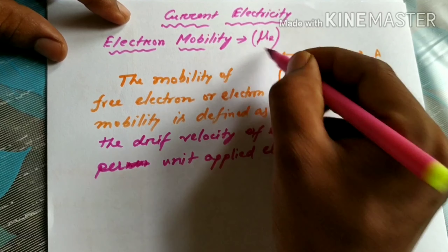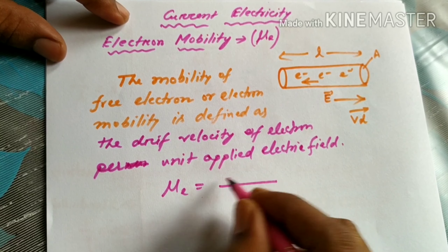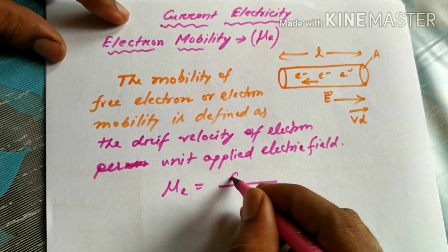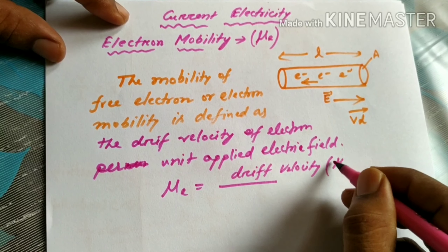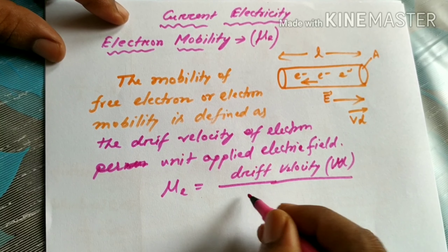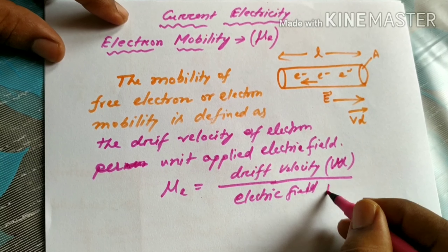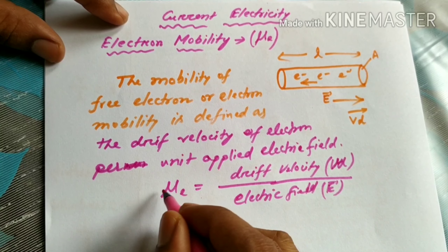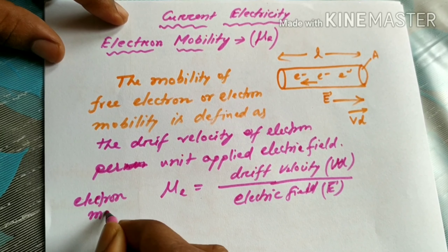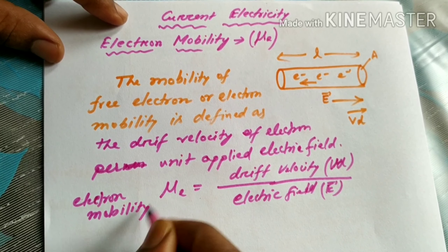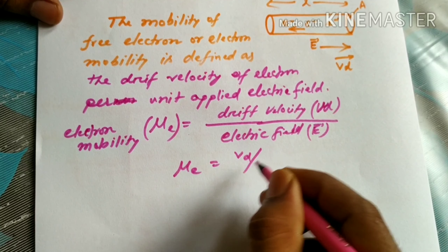Electron mobility is denoted by mu. We consider electron mobility mu of E. So mu of E is equal to drift velocity Vd divided by the applied electric field E. That is, mu of E is equal to simply Vd divided by E.